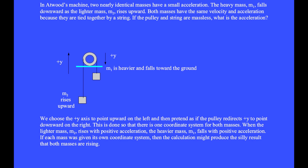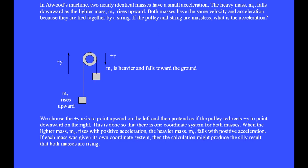If the pulley and string are massless, what is the acceleration? We choose the plus y-axis to point upward on the left and pretend the pulley redirects plus y to point downward on the right, so there is one coordinate system for both masses. When the lighter mass m2 rises with positive acceleration, the heavier mass m1 falls with positive acceleration. If each mass had its own coordinate system, the calculation might produce the silly result that both masses are rising.